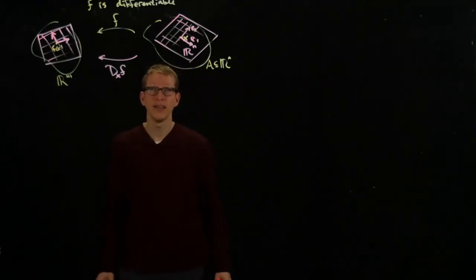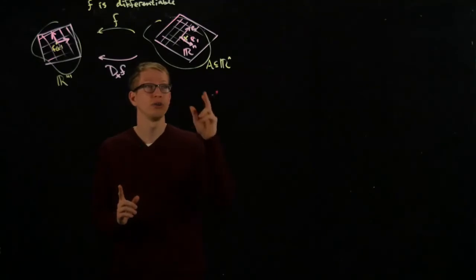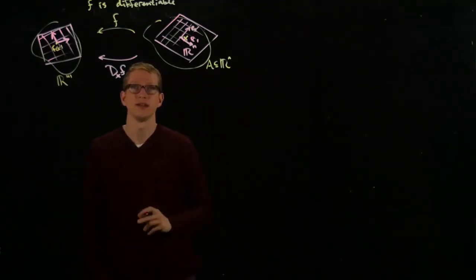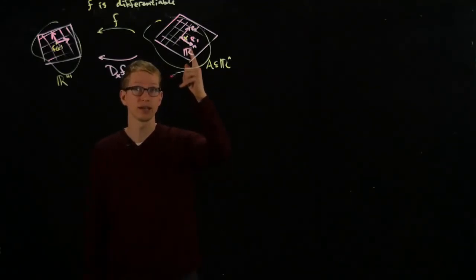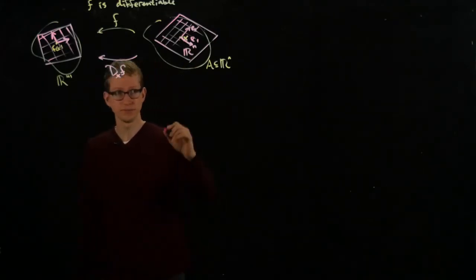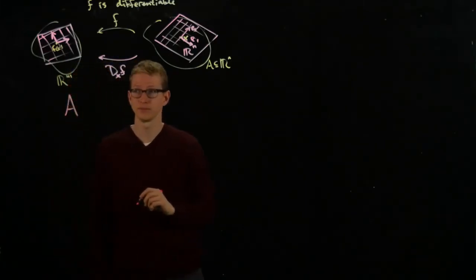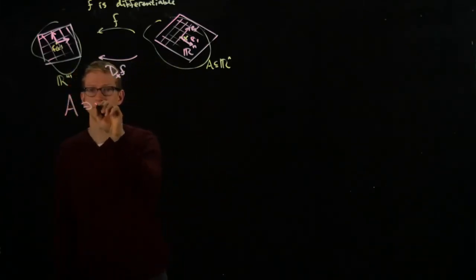Now, this picture happens for every single point on which the differential's defined. That means for every x, I have such a linear transformation. In other words, if I take A, and x is an element of A...